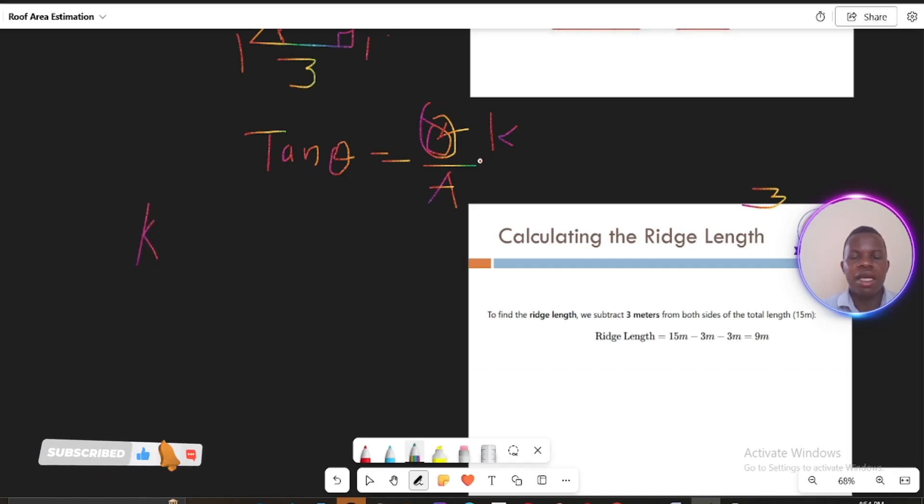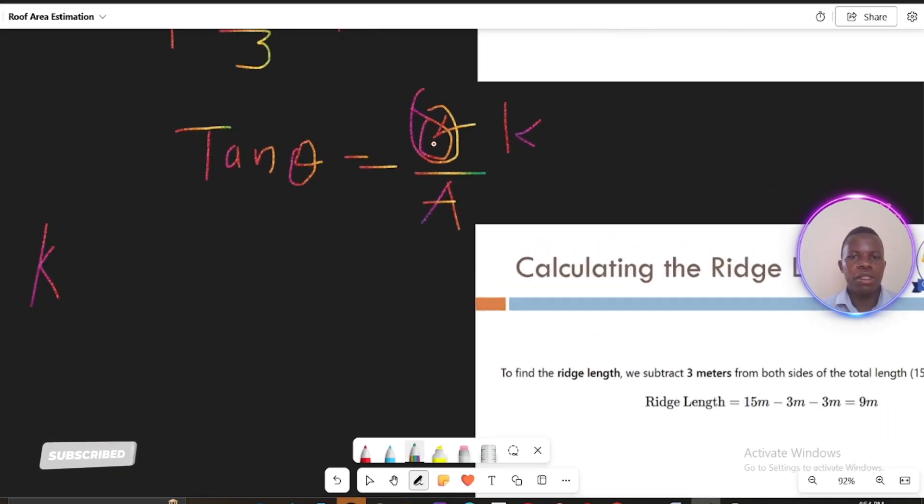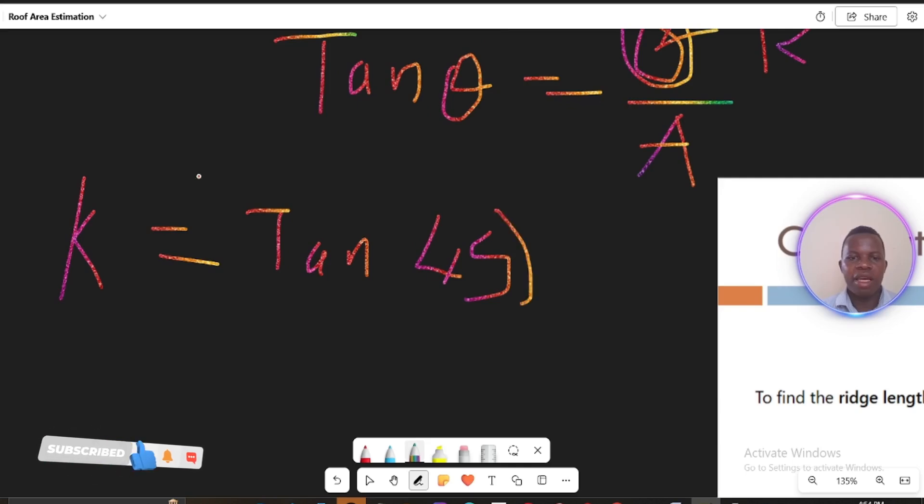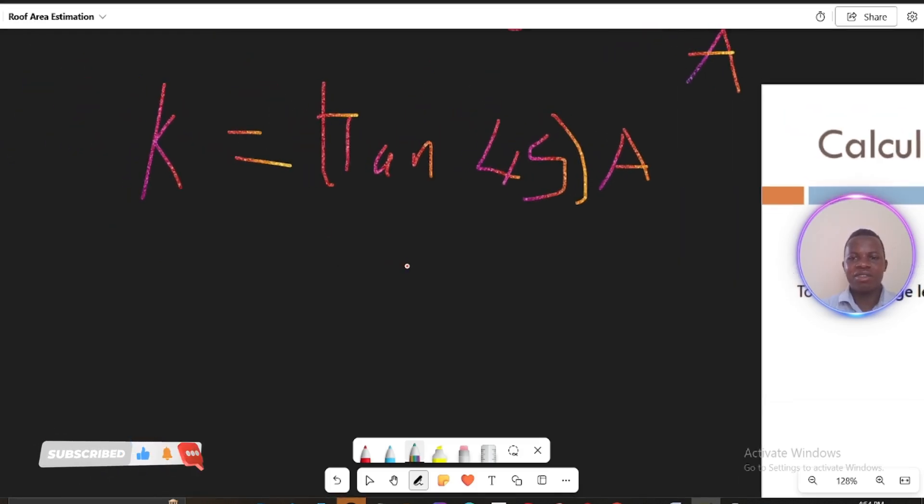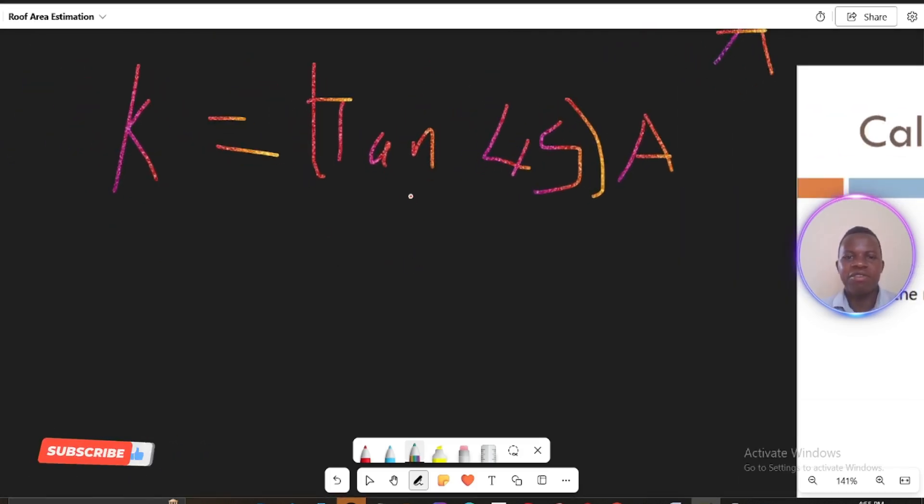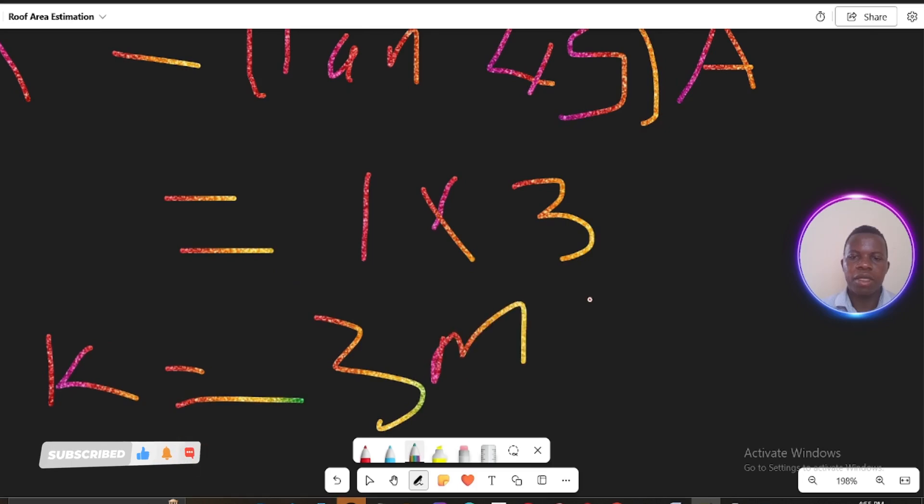So we can say that k, which is the opposite, equals to our tan here, which is tan(45). And then everything here will multiply by the adjacent. I'm just doing it systematically so you understand what I'm really referring to. Then to get this k, tan(45), I have my calculator here. It's 1. And then I have my adjacent length as 3. So k equals to 3 meters.